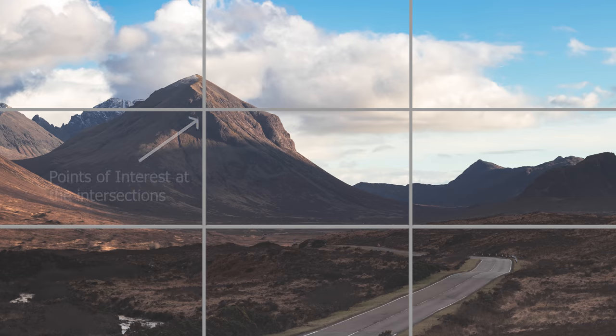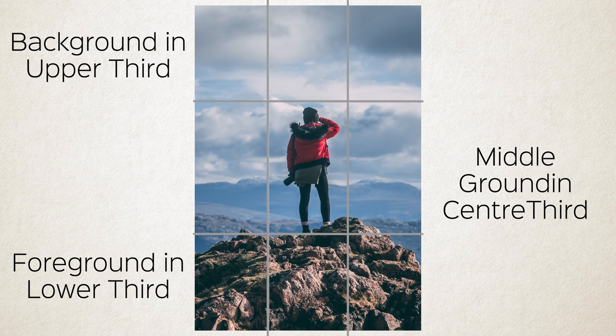The first guideline is the rule of thirds. It involves dividing your photo up into a grid of nine rectangles, giving you two vertical lines and two horizontal lines. A lot of cameras actually have a feature where you can have this grid overlaying the shot. The idea is to use these lines to place your subject or important items in your scene along one of the lines on the grid — whether it's a vertical tree or a person.